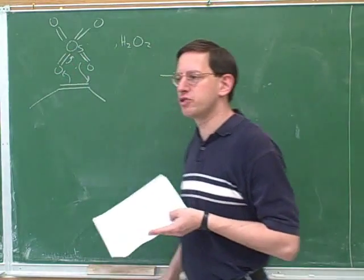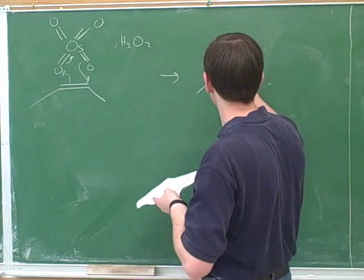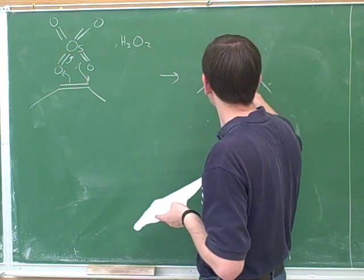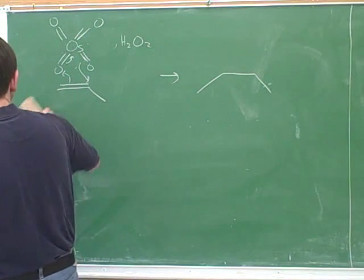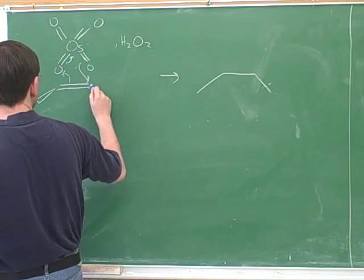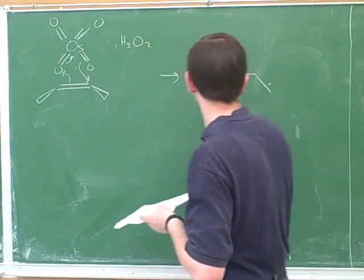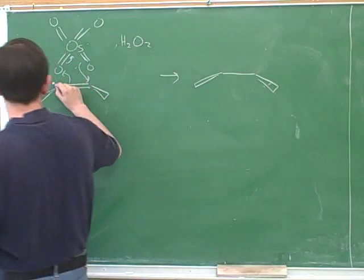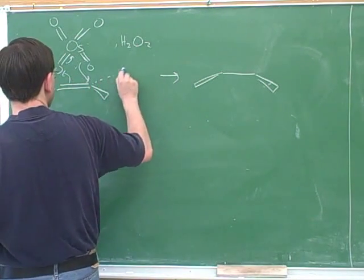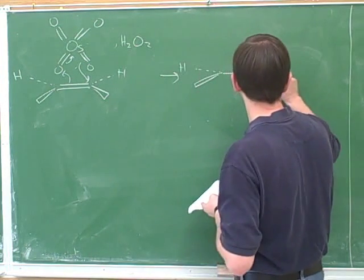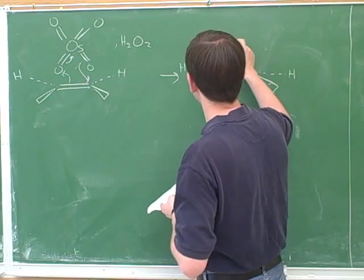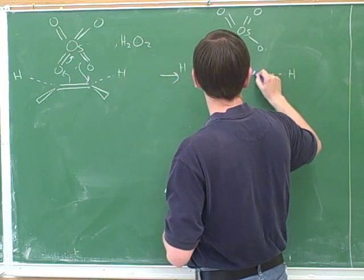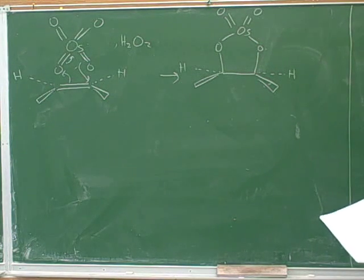If we pay close attention to the arrows, we should be able to draw what the product looks like from this step. This is another case where it helps to draw the alkene with wedges and dashes, I think. Well, that would give us this intermediate.